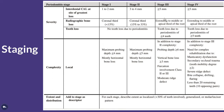In Stage 3, bone loss mostly extends to the middle third of the root. In Stage 4, it mostly reaches the apical third of the root, and here we have tooth loss due to periodontitis — four teeth or fewer in Stage 3, but five or more teeth lost due to periodontitis in Stage 4.